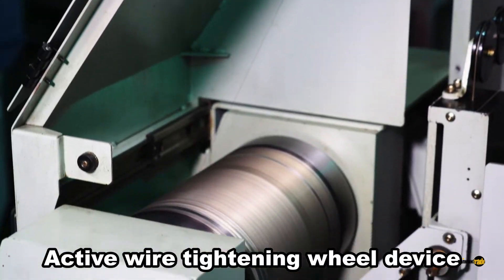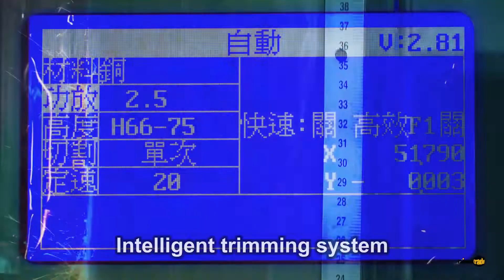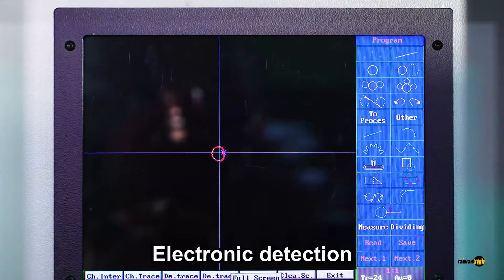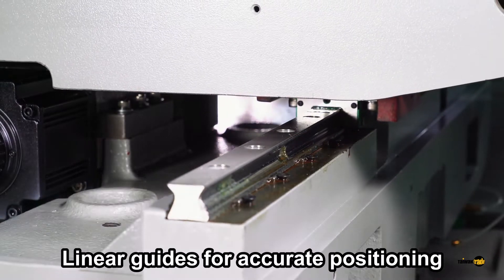Active wire tightening wheel device, diamond guide, intelligent trimming system, 3-stage filtering system, electronic detection, and linear guides for accurate positioning.